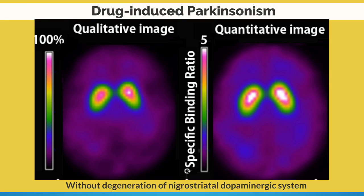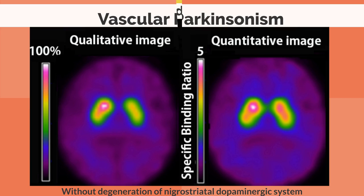Drugs that decrease dopamine activity can cause parkinsonism as a side effect, called drug-induced parkinsonism, and DAT scan is normal in these cases. Vascular parkinsonism is caused by multiple small infarcts in the striatum or by lack of blood flow to large areas of white matter capillaries. DAT scan accumulation is reduced at the site of infarcts in the striatum, but the decrease in specific binding ratio is mild.